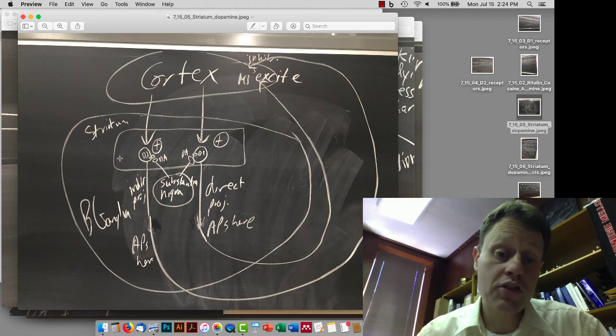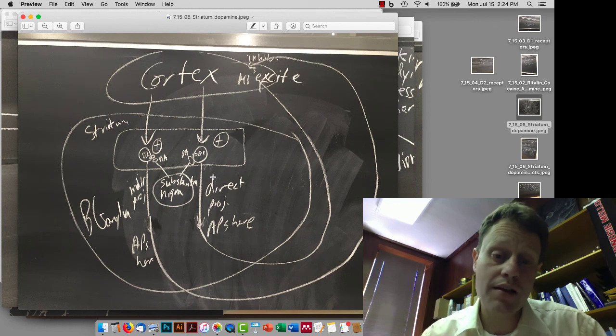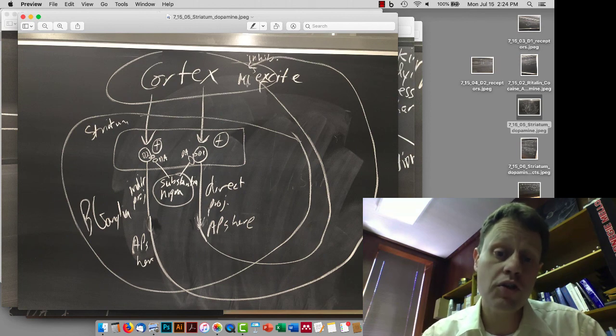The substantia nigra releases dopamine onto both of these cells. The direct projecting cells have D1 receptors. What that means is that when the direct projecting cells get dopamine, they get excited by dopamine, they fire more action potentials, and then you turn on movement.